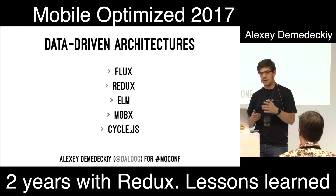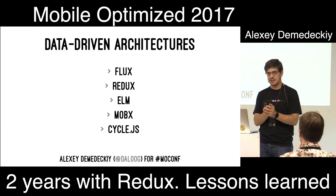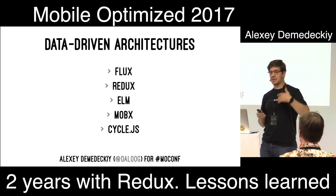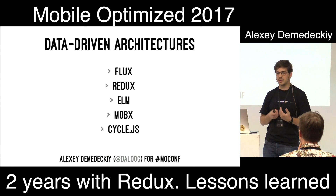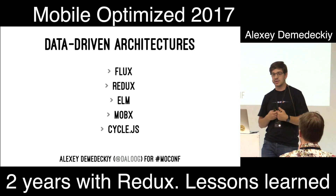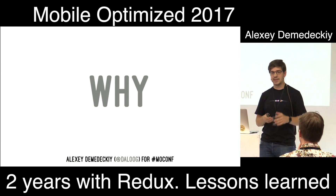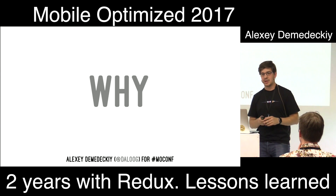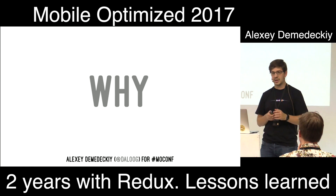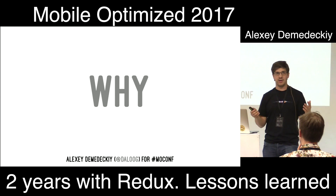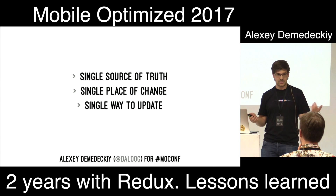They all aim at similar problems — how to maintain state — and they offer similar solutions. I started to think about the reasoning behind it: why did the idea of the unidirectional approach become so popular? How can I use its benefits in day-to-day iOS development? All these ideas have a pretty common and simple structure. You need a single source of truth that accumulates the whole application state. When it's one, you cannot have any synchronization issues.